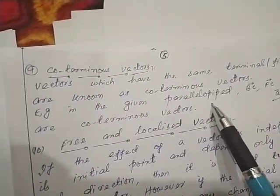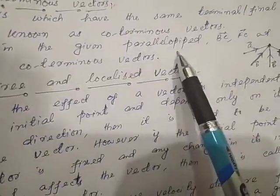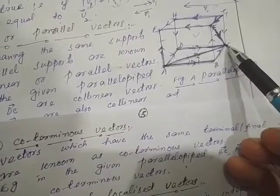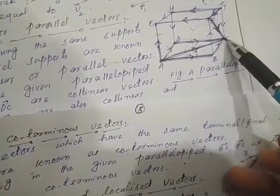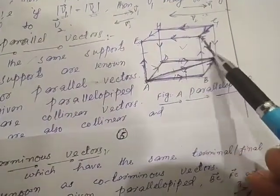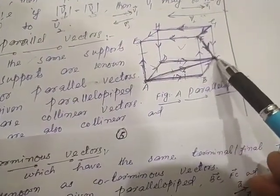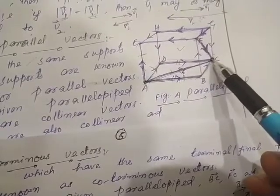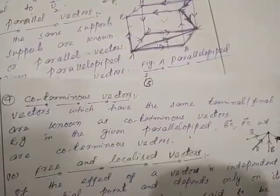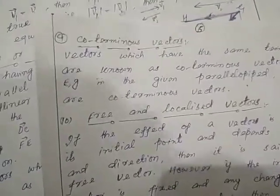For example, in the given parallelepiped, BC vector, FC vector, and GC vector are co-terminus vectors. These three vectors — BC, GC, and FC — have the same terminal point C. That is why all these three vectors are termed as co-terminus vectors. This was the ninth type of vectors.